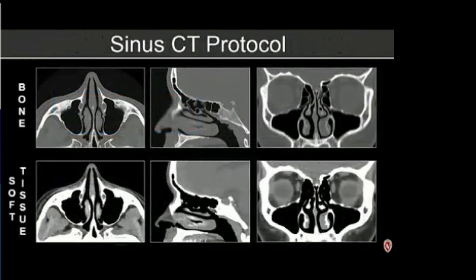Our workhorse for everyday review are CT scans without contrast of the paranasal sinuses. We do thin images in the axial, sagittal, and coronal planes in both bone and soft tissue algorithm. It's really important to have soft tissue windows so that you can do a good job looking at the adjacent regional anatomy beyond the sinuses themselves.